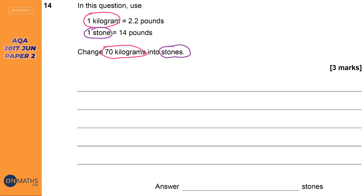So we've got kilograms on this side, and we've got pounds on this side. So one kilogram is equal to roughly 2.2 pounds, and we need to change 70 of them.